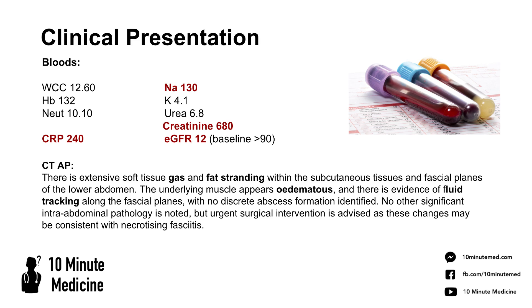ED has already ordered a CT abdomen/pelvis, and the report has come back. The key findings highlighted are extensive soft tissue gas and fat stranding in the subcutaneous tissue, underlying muscle appearing oedematous indicating fluid where there shouldn't be, and fluid tracking along the fascial planes. There's no obvious abscess or intra-abdominal pathology, but radiology has recommended urgent surgical review as these changes are consistent with necrotising fasciitis.